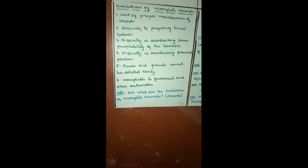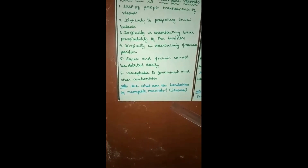Third: difficulty in ascertaining true profitability of the business — if we are not entering all transactions, we cannot find out the real profit or loss. Fourth: difficulty in ascertaining financial position — we prepare a balance sheet to know the real financial position, but here it is not possible because not all transactions are entered. Additionally, errors and fraud cannot be detected easily, and it is unacceptable to the government and other authorities because it does not show the real profit or real financial position.